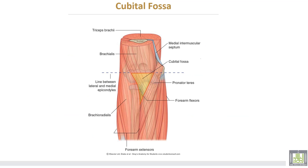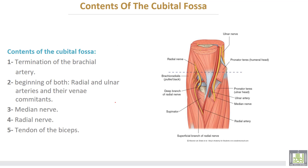The floor of the cubital fossa is formed by the brachialis and supinator muscles. The base is the imaginary line between the two epicondyles of the humerus; the medial boundary is formed by pronator teres, and the lateral boundary by the brachioradialis muscle. The contents of the cubital fossa include: the termination of the brachial artery into its two terminal branches.